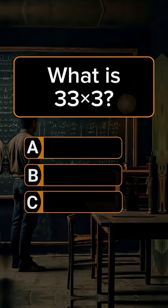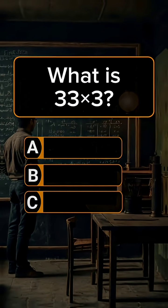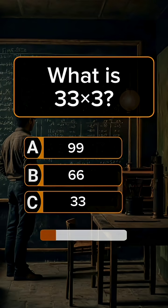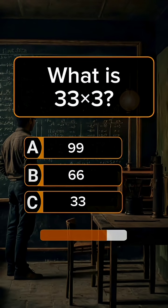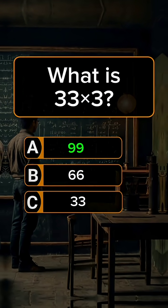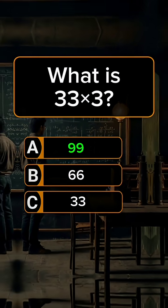Question 3. What is 33 times 3? Answer A: 99.